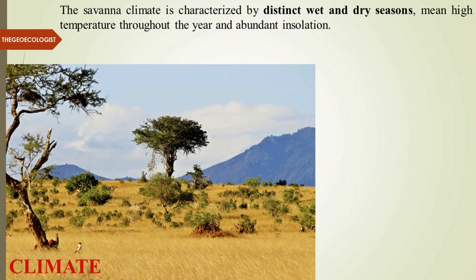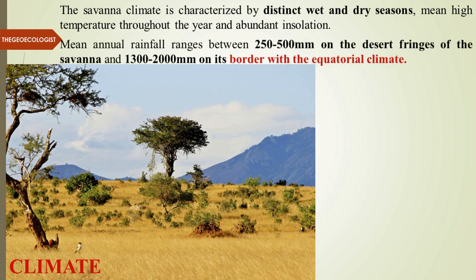The Savannah climate is characterized by distinct wet and dry seasons throughout the year. Mean annual rainfall ranges between 250 to 500 millimeters on desert fringes where two biomes meet, and 1300 to 2000 millimeters where it borders with the equatorial area. So closer to the equator there is more rainfall, and farther from the equator there is less rainfall.